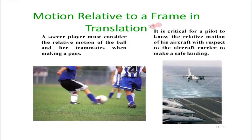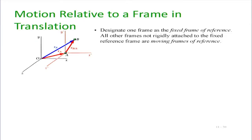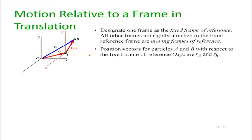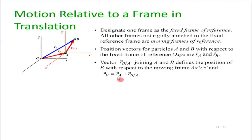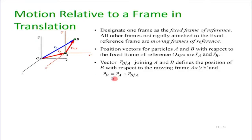Moving on to motion relative to a frame of translation: previously for rectilinear motion we had r_B = r_A + r_{B/A}. Here we generalize to general 3D curvilinear motion — the x and y displacements are replaced by corresponding vectors. If I have a fixed frame of reference and a moving frame attached to observer A, we can find the position, velocity, and acceleration of B as seen from that moving frame.